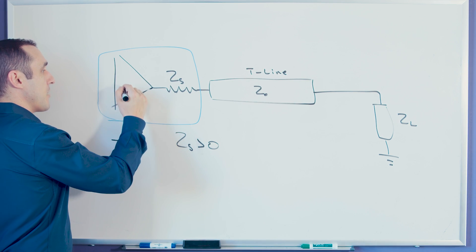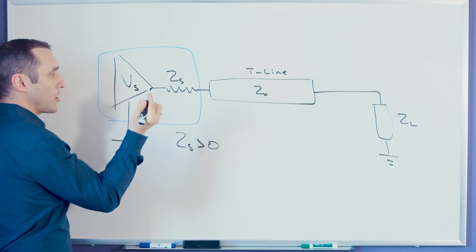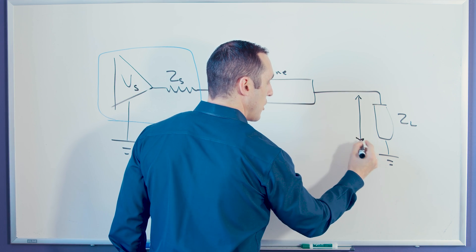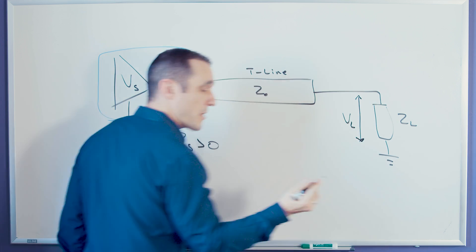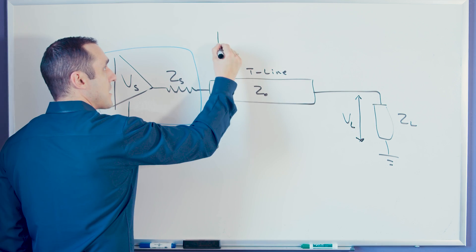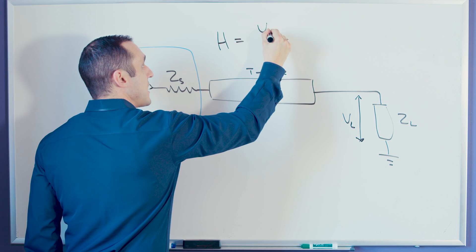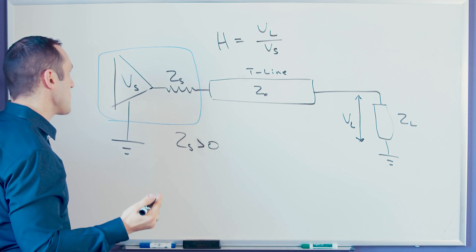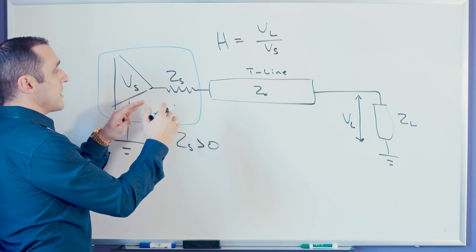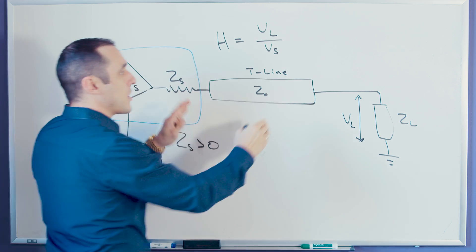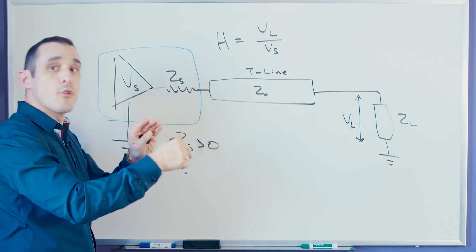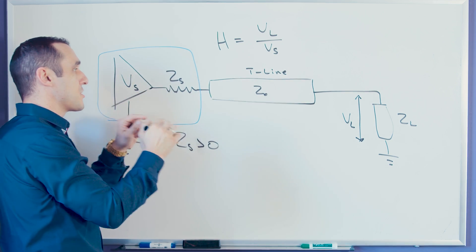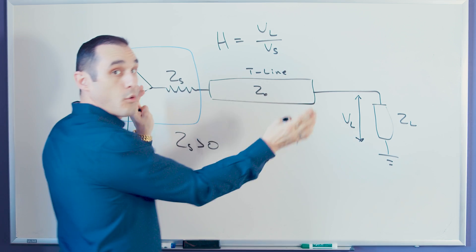Inside of this buffer we have a source voltage V sub S, and if we measure the voltage drop across the load we call that V sub L. With a transmission line transfer function we can calculate V sub L over V sub S. If we start plugging in these values into our transfer function along with any terminators, we can see whether or not it makes sense to add termination resistors in series, parallel, or both at the same time.